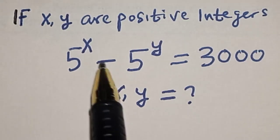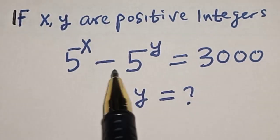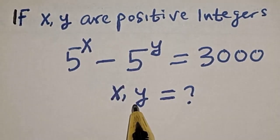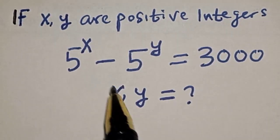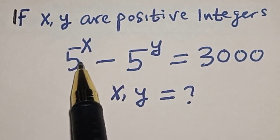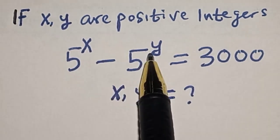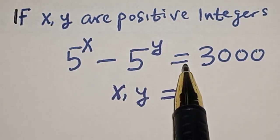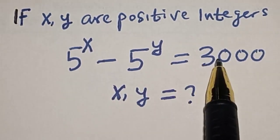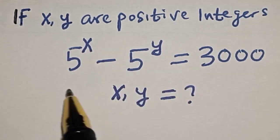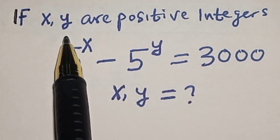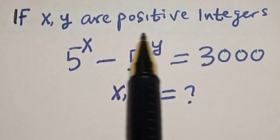Hello, welcome to Mantgist. In this class we want to find the value of x from this equation: 5 raised to power x minus 5 raised to power y is equal to 3000, where both x and y are positive integers.